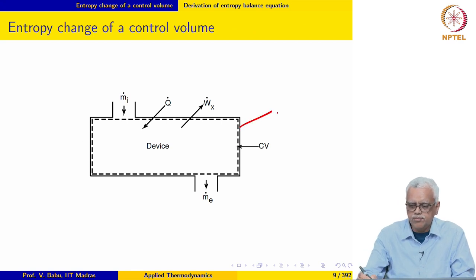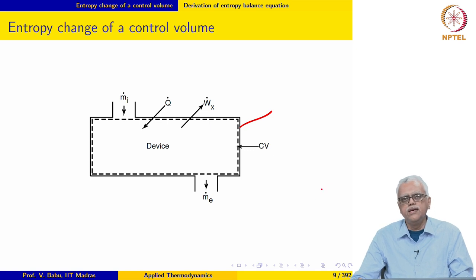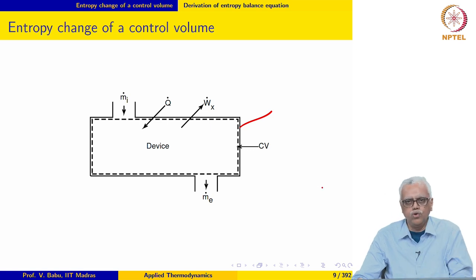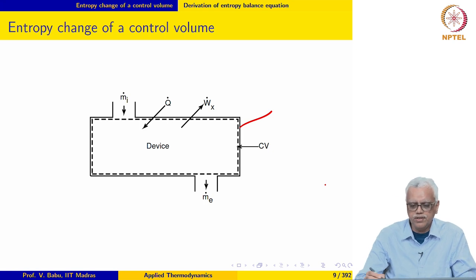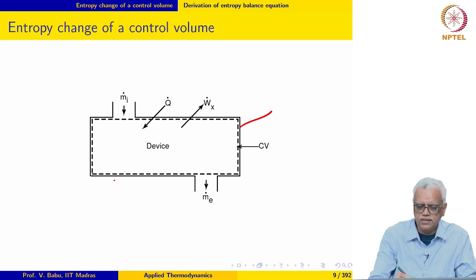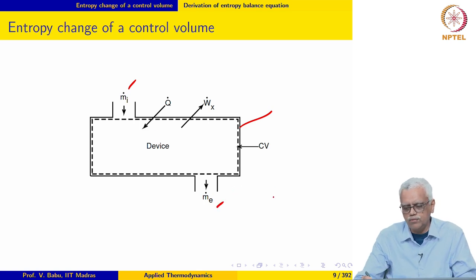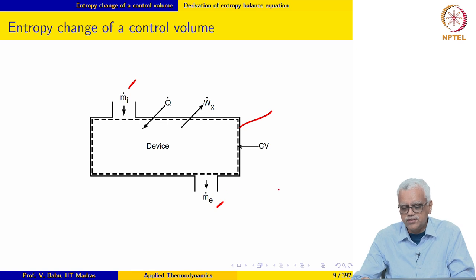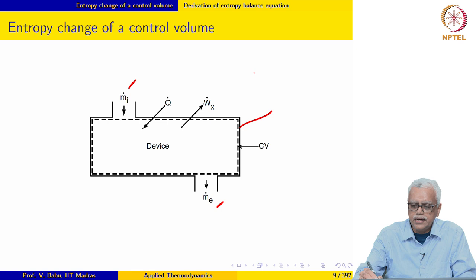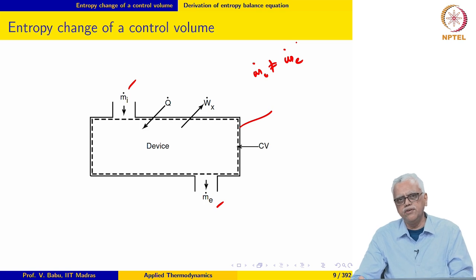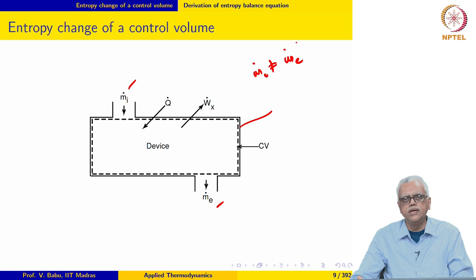The starting point is the same illustration used in the previous course when we derived the unsteady flow energy equation. We have a device — a rectangular box — which has, for simplicity and without loss of generality, one inlet and one outlet. Fluid enters the device at the rate of ṁ_i kg per second and leaves at the rate of ṁ_e kg per second. In general, ṁ_i need not equal ṁ_e, though for a steady flow process we may take them to be equal.